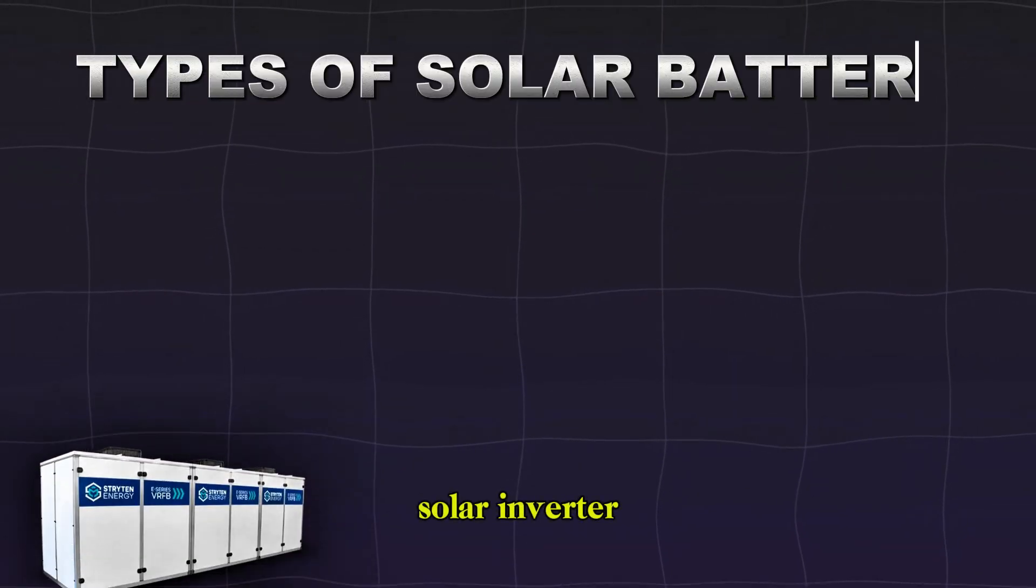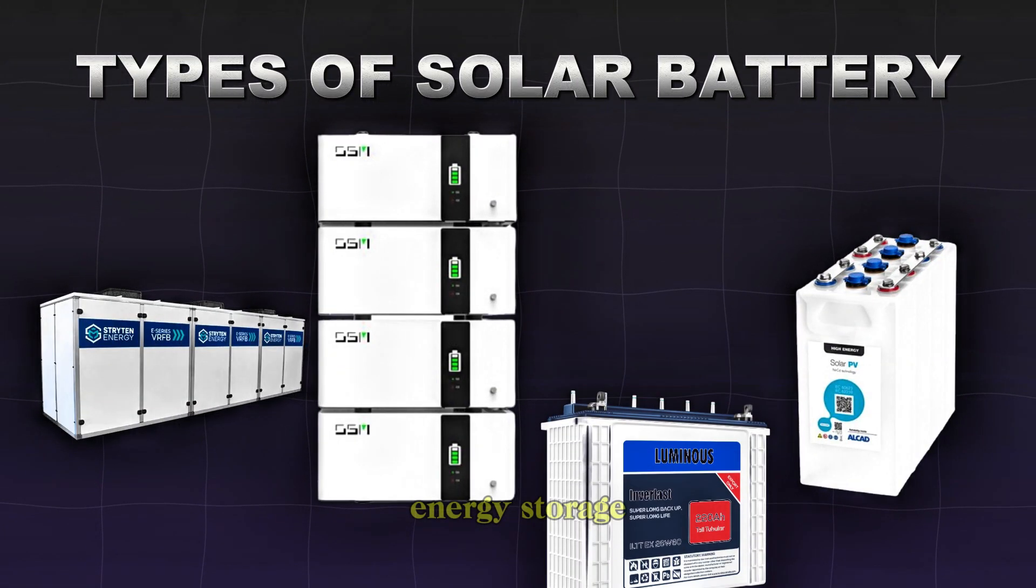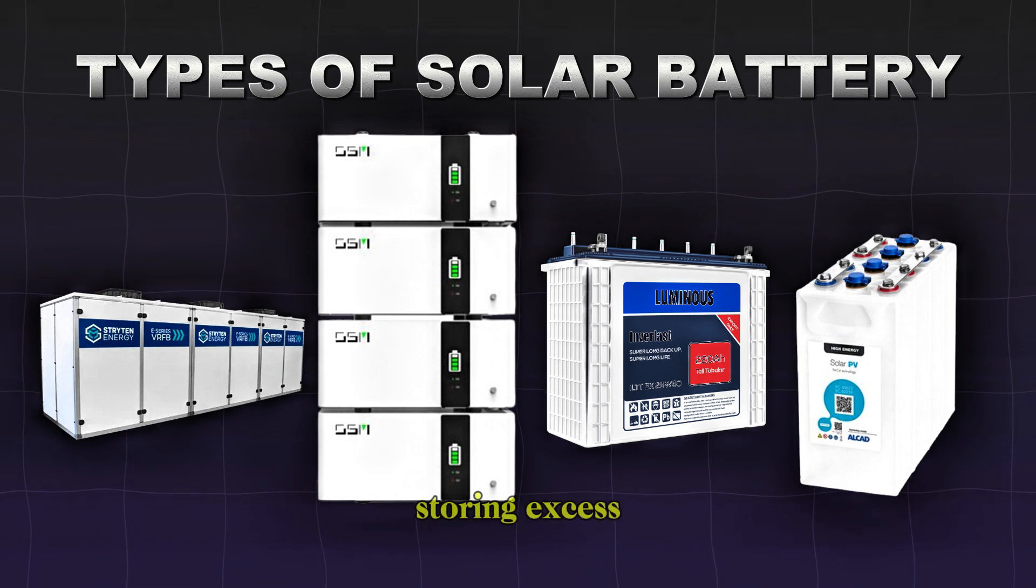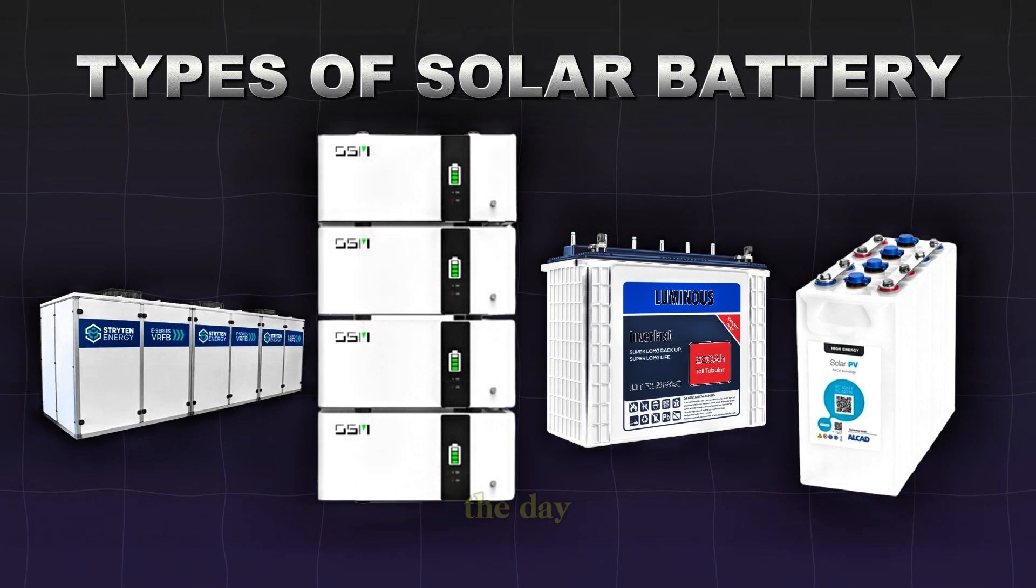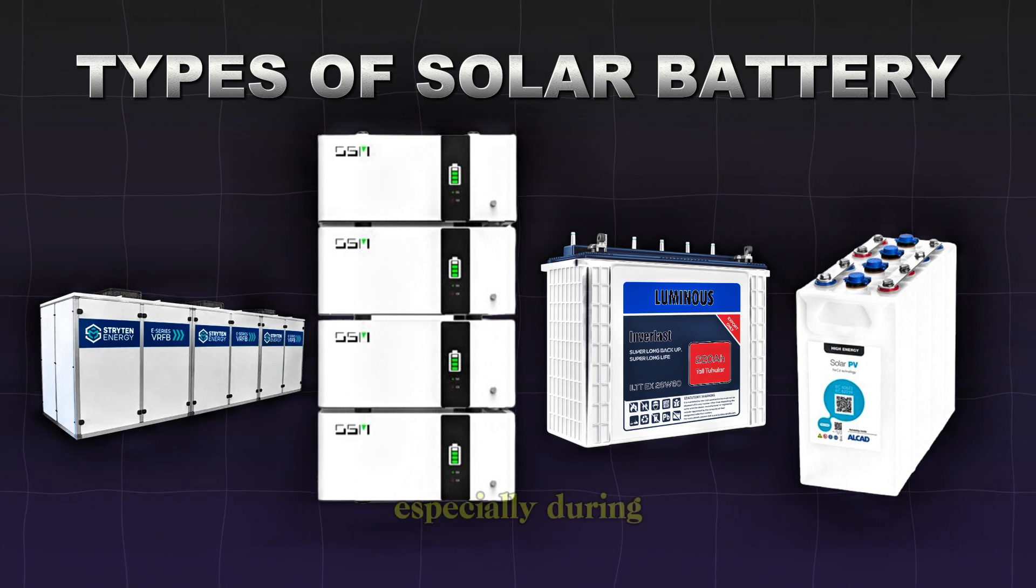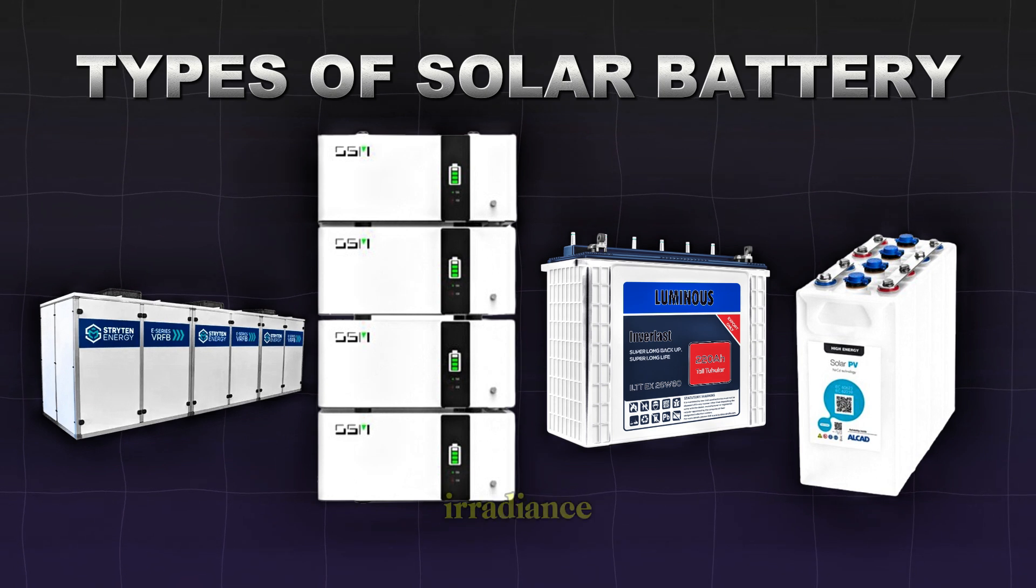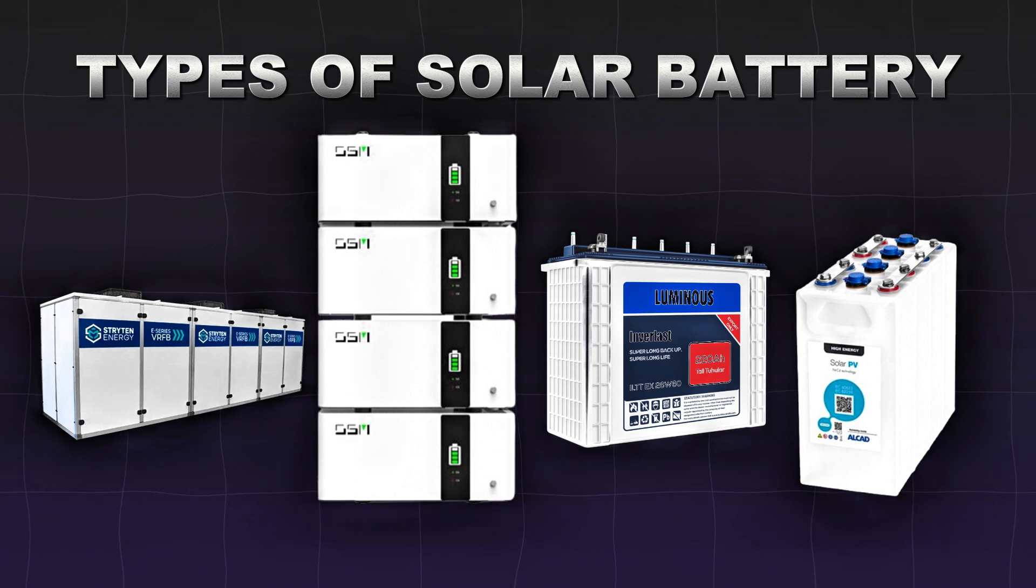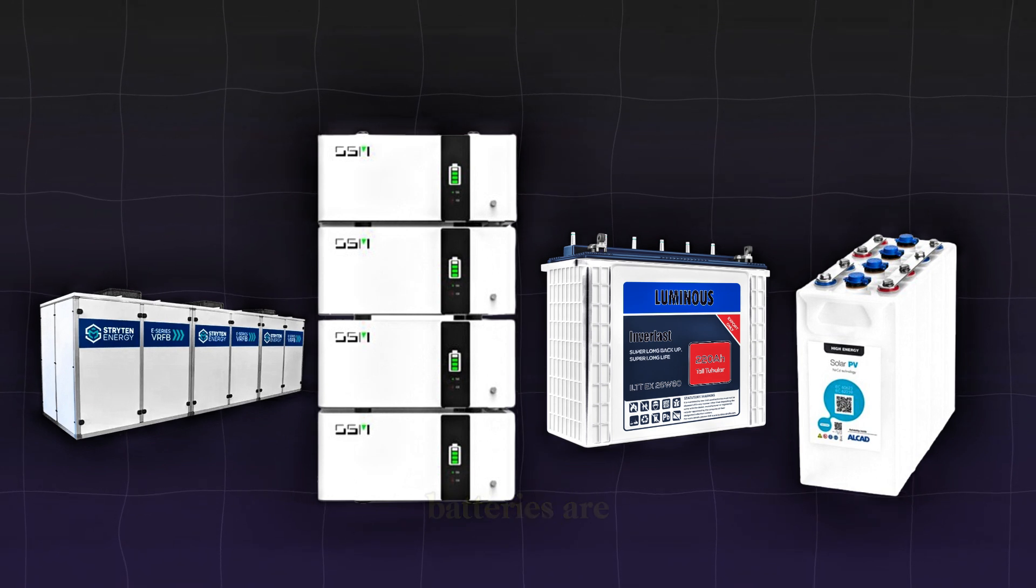In a solar inverter installation, the battery acts as a crucial energy storage component, storing excess solar power generated during the day for later use, especially during periods of low solar irradiance or grid outage. The four main types of solar batteries are: